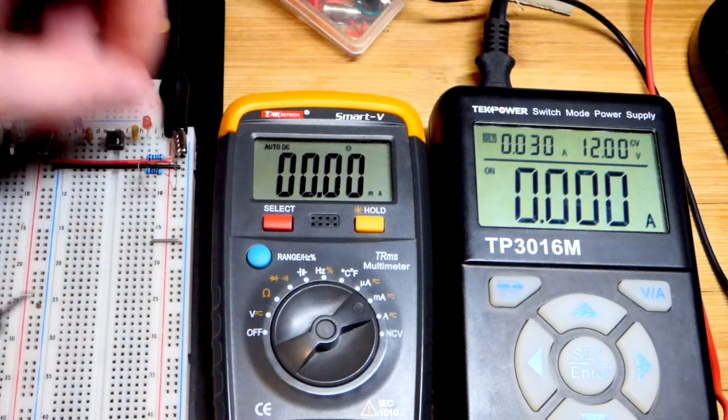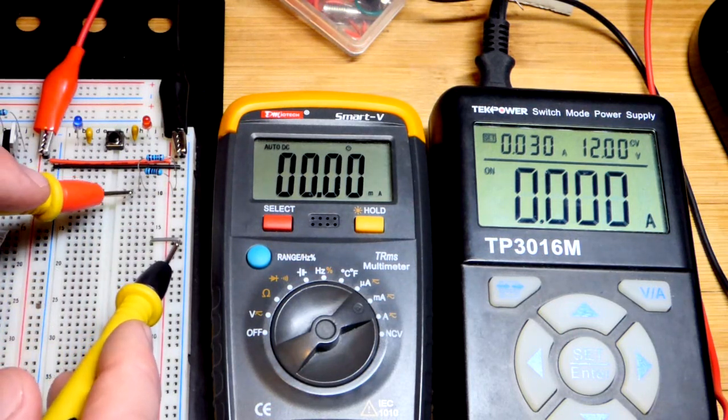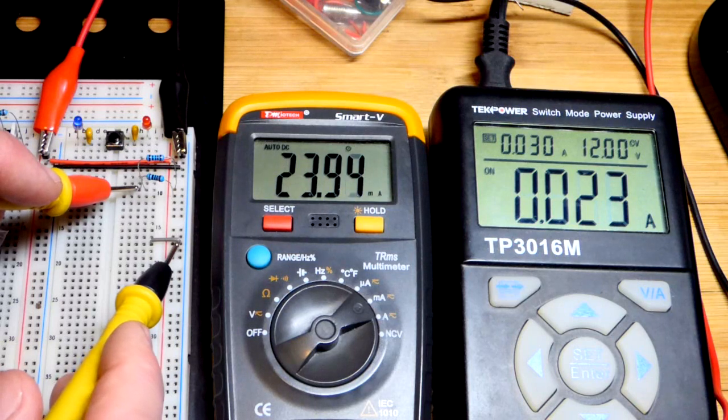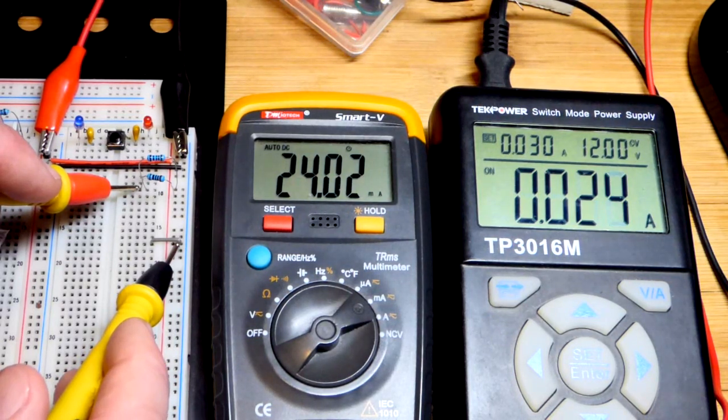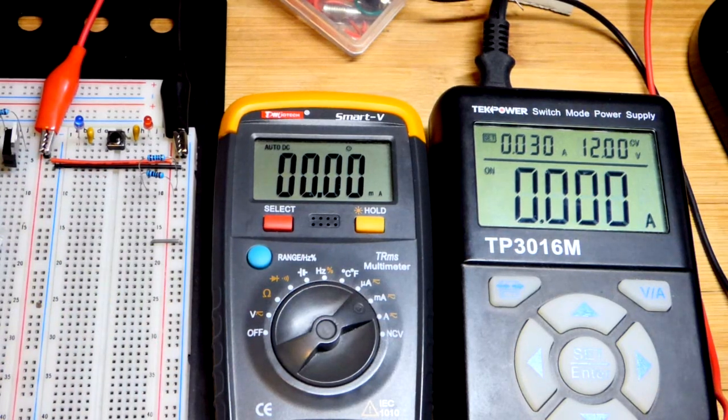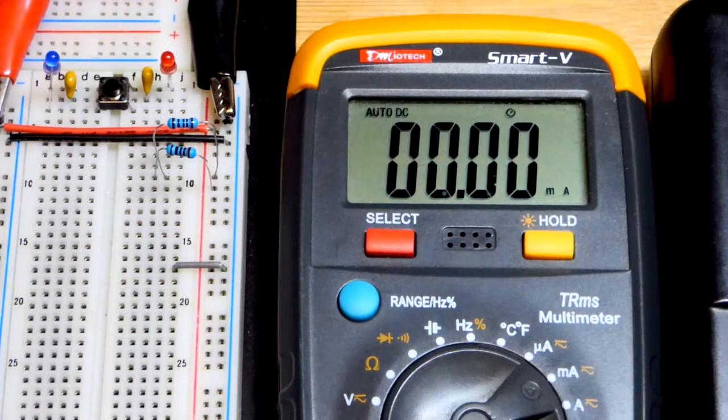I'll put the other resistor in parallel. Going to the positive supply and then meeting at the same point. They're in parallel. Both sides of the resistors are connected to the same two spots. And there you can see we have 24 milliamps of current on both the power supply and the meter which is more accurate.